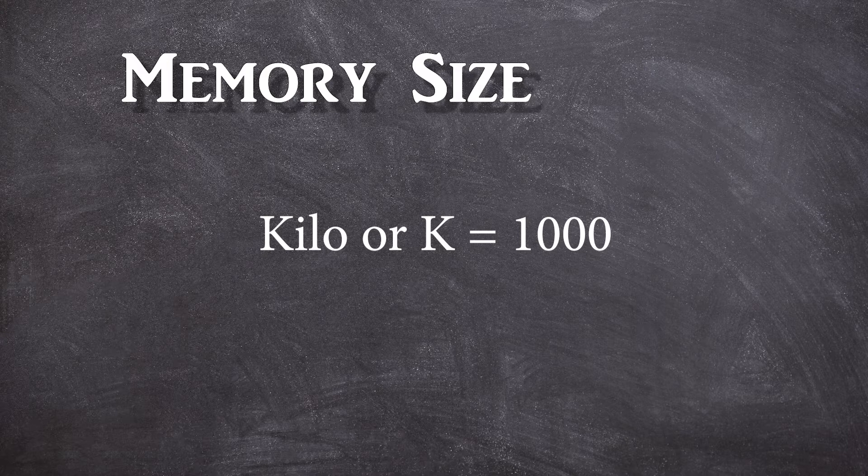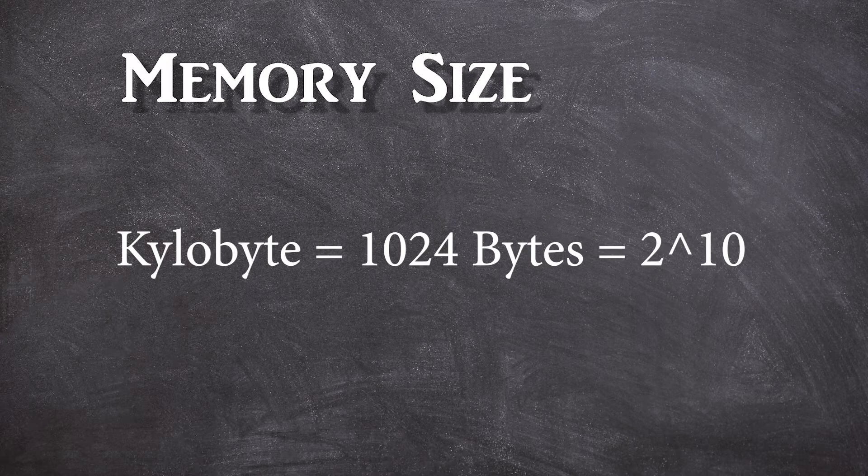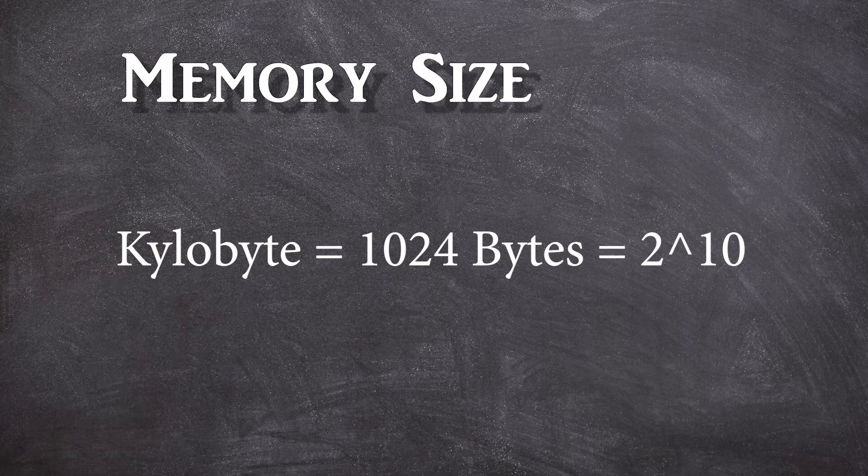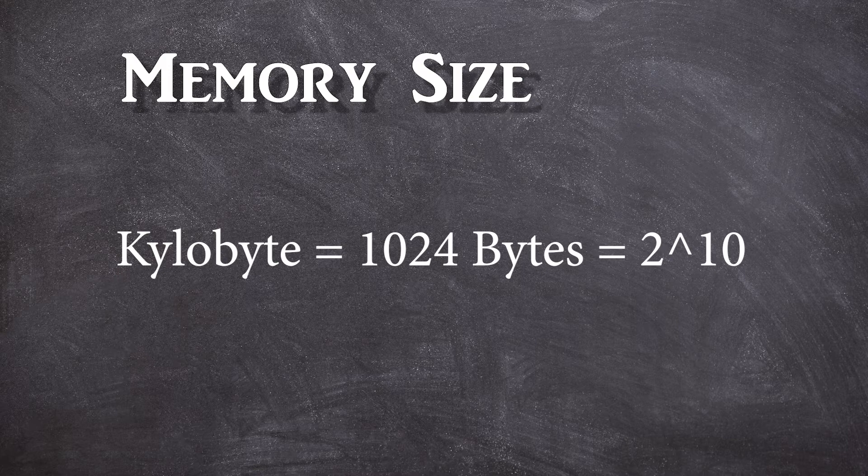When it comes to kilobytes, a kilobyte is 1024 bytes. A little bit over a thousand, but since everything is powered by 2, 2 to the power of 10 is 1024. And 2 to the power of 9 is 512. So we round it off to 1024.